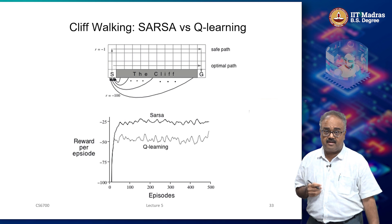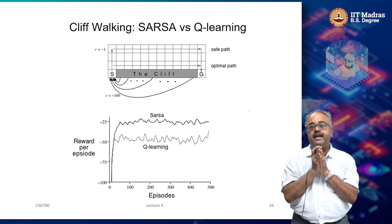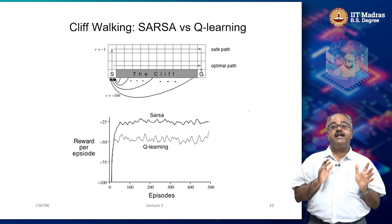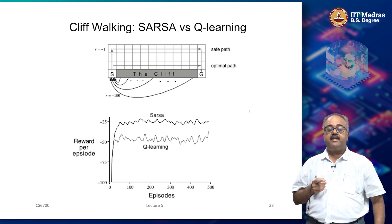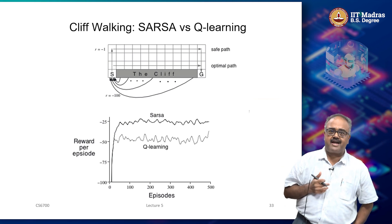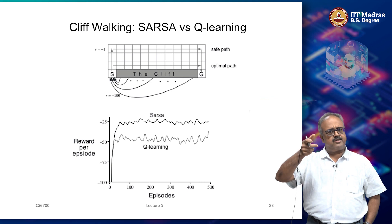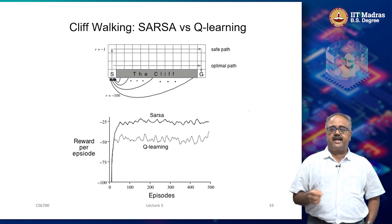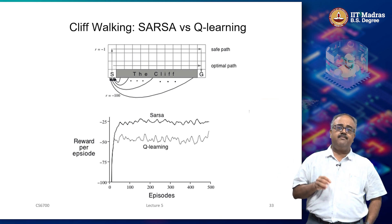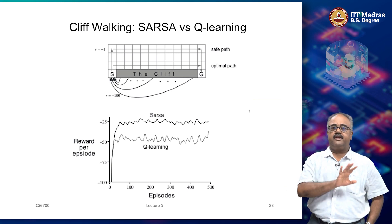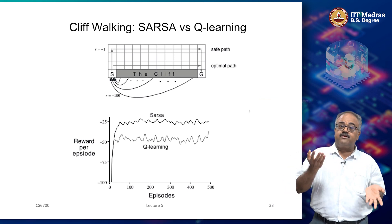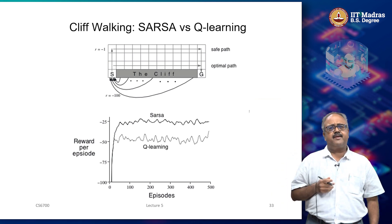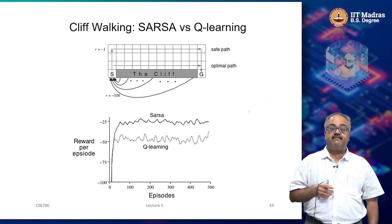If we behave according to the epsilon-greedy policy in Q-learning, only for a small epsilon fraction of the time would we make a different update compared to SARSA. Whenever an exploratory action is taken, Q-learning still updates with the max action while SARSA updates with the exploratory action — that is the only change. Q-learning always updates with the greedy action, while for an epsilon fraction of the time SARSA updates with a different action. Though Q-learning and SARSA differ in only a small fraction of updates, it turns out this can result in different behaviors, especially when epsilon is kept fixed during learning.